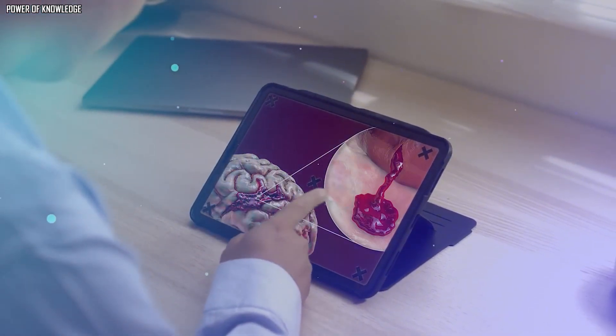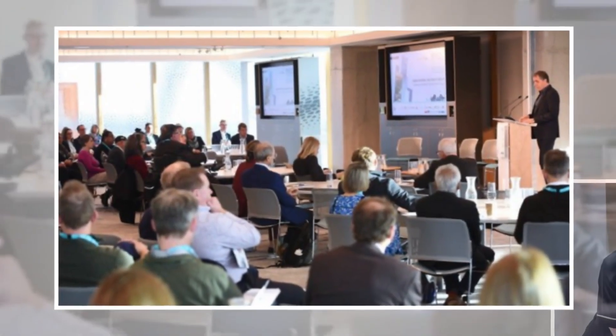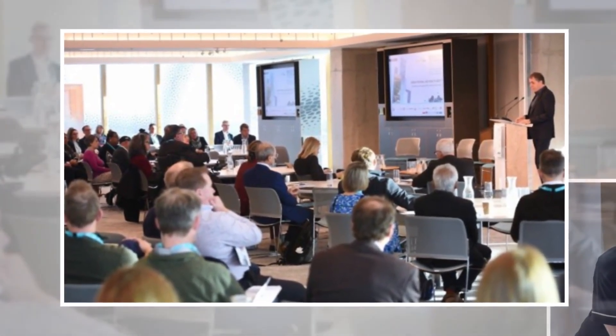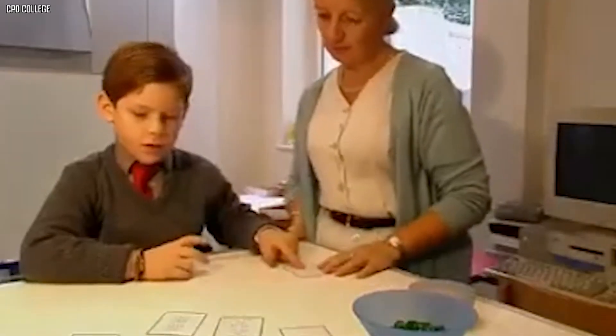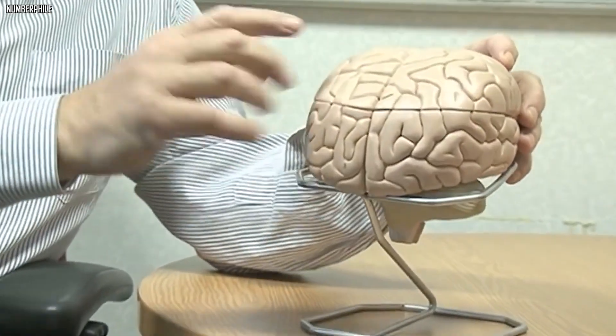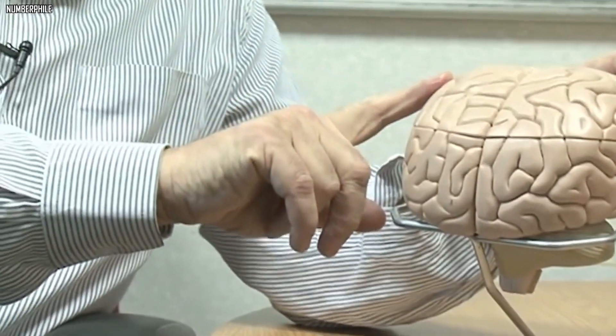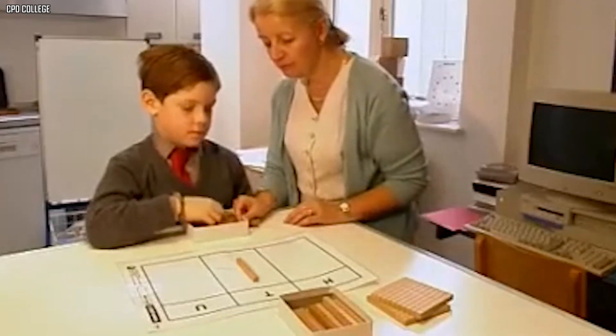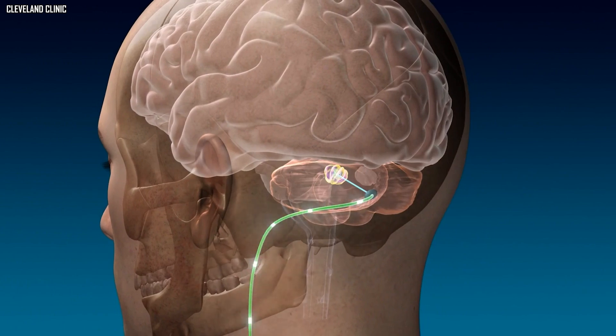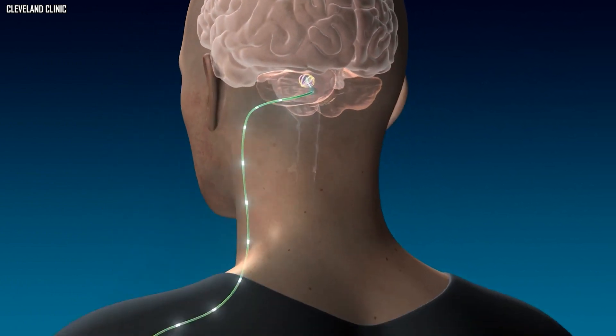In 1999, neuropsychologist Brian Butterworth made a fascinating discovery that shook up the way we think about how the brain handles numbers. One of his patients, a woman who had managed the accounts for her family's hotel, suddenly couldn't deal with numbers above four after a stroke hit the left side of her brain. What made this case so interesting was that she could still function in every other way. Her memory, reasoning, and language were perfectly fine. But when it came to numbers, they just didn't make sense to her anymore.